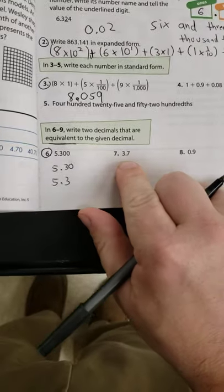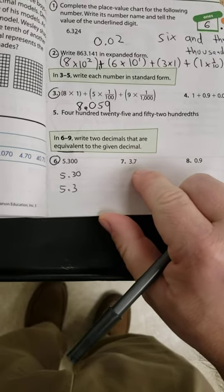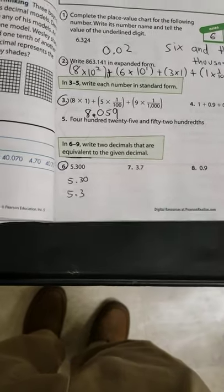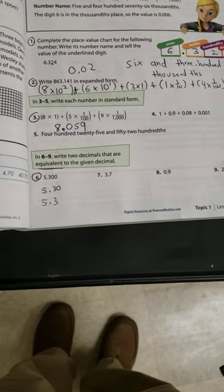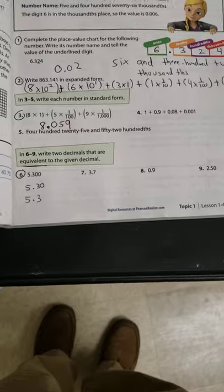So for number seven, all I'd have to do is add zeros. Three point seven zero, three point seven zero zero. So you either add or take away zeros to the end, and they're still going to be worth the same. Hope that helped.